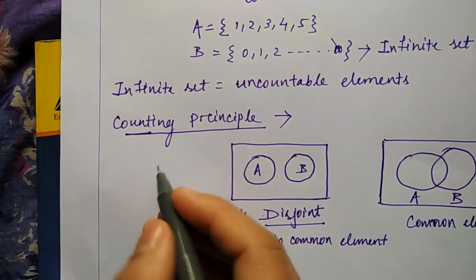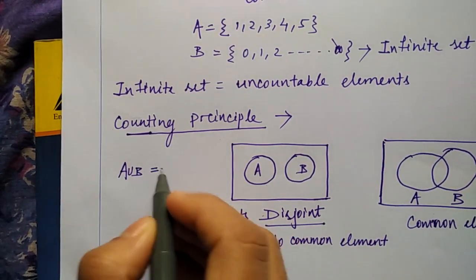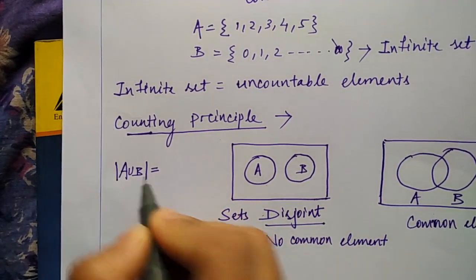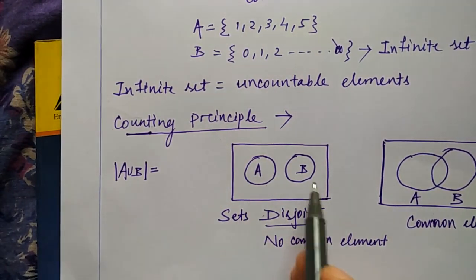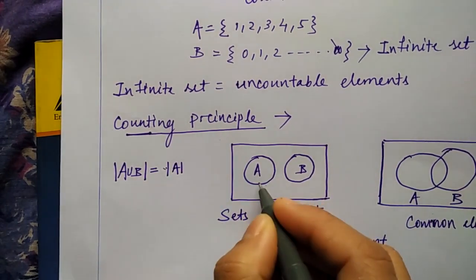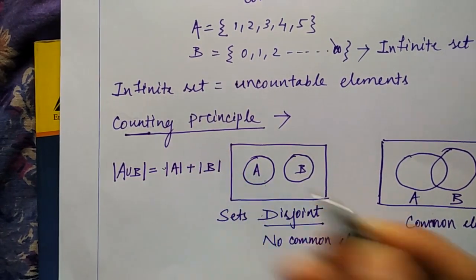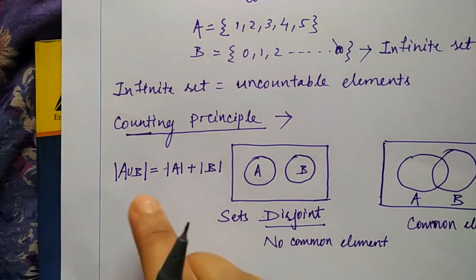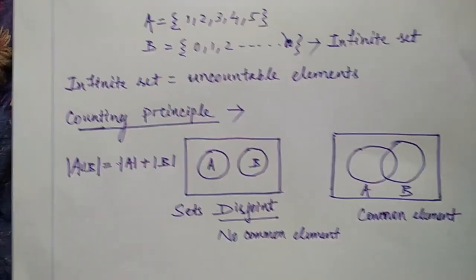In the first case (disjoint sets), if you want to find A union B — the total number of elements when performing the operation A∪B — it will simply be the number of elements in A plus the number of elements in B. That gives the total number of elements when you perform A∪B.